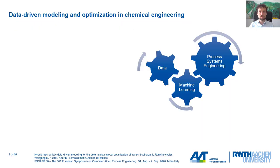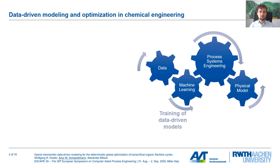Let's start with data-driven modeling and optimization in chemical engineering. What we mean by data-driven modeling is that we use machine learning to train data-driven models in a supervised way. We often combine these data-driven models with existing physical models to form hybrid mechanistic data-driven models, and then use optimization to find optimal operation or design of processes.